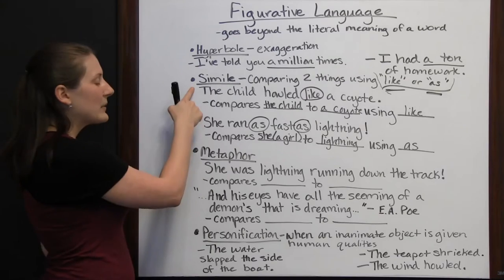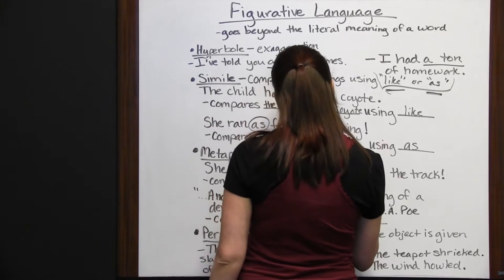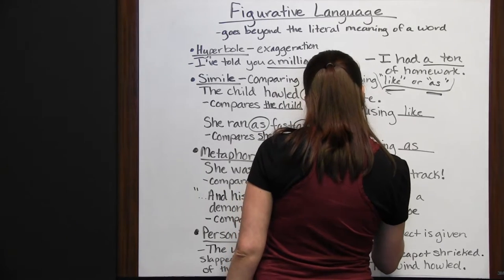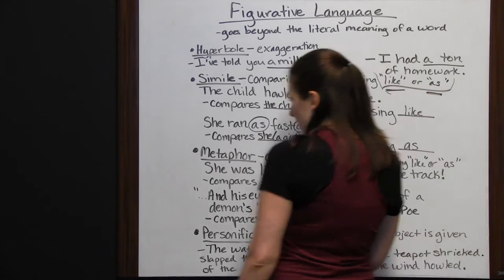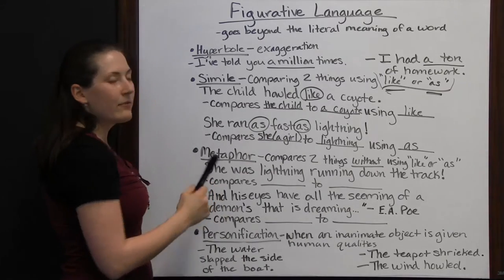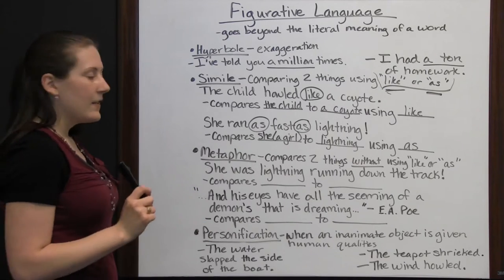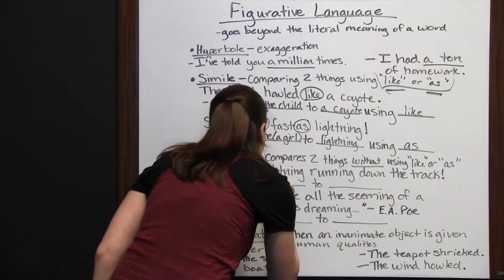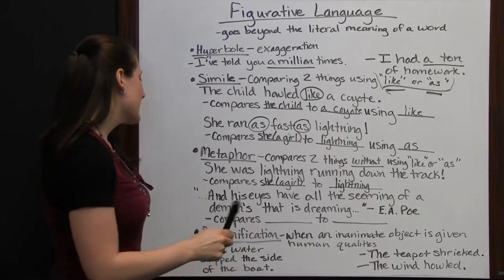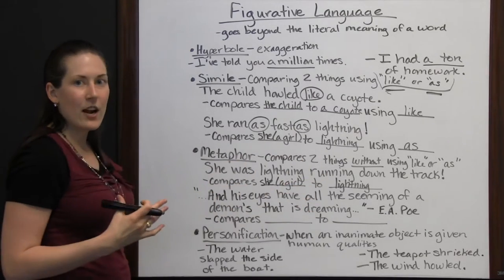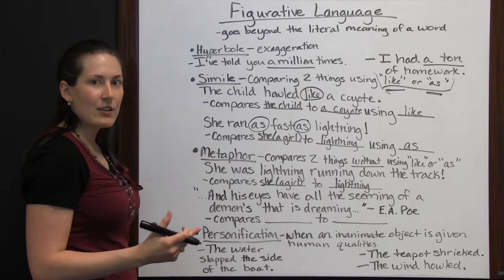It could be a metaphor, which compares two things without using like or as. That is really the big difference between a simile and a metaphor — a simile uses like or as, a metaphor does not. So let's look at some metaphor examples. "She was lightning running down the track." This sentence is very similar — both comparing a girl to lightning, both saying she's really fast. But this one just says she was lightning; it doesn't say she ran as fast as lightning. It doesn't use like or as.